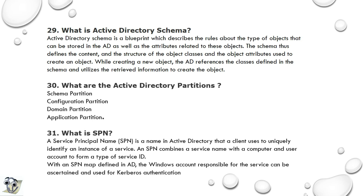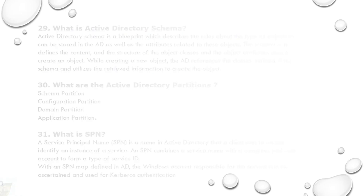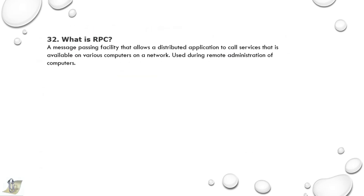31st question: What is SPN? A service principal name is a name in Active Directory that a client uses to uniquely identify an instance of a service. An SPN combines a service name with a computer and user account to form a type of service ID. 32nd question: What is RPC? A message-passing facility that allows a distributed application to call services available on various computers on a network. It is used during remote administration of computers.